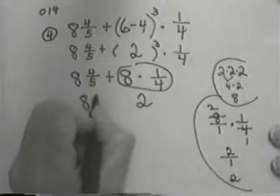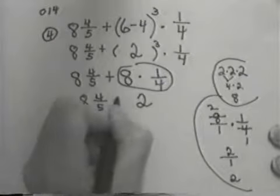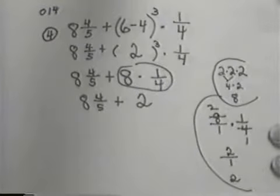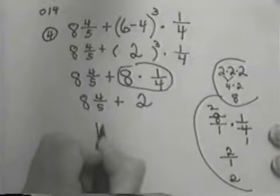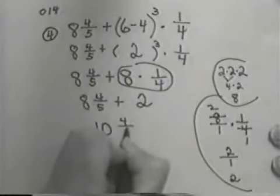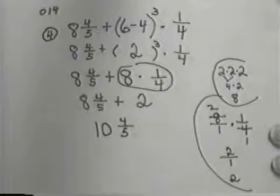So I'm going to write the rest of my problem down. I have 8 and 4/5 plus 2. And this is another case where I can just add it the way it is and get 10 and 4/5.